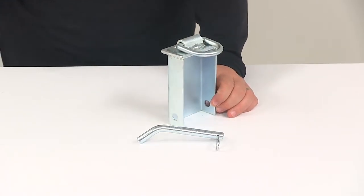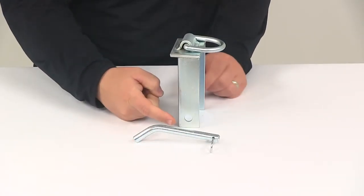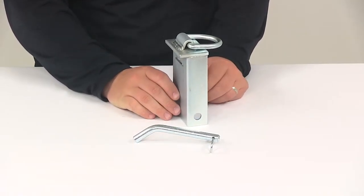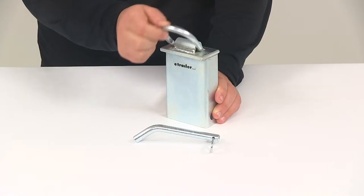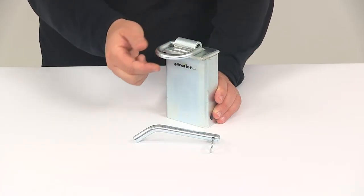The unit is going to secure in place with the included pin and clip. It's got the pin holes down here to run that through to get it fully secured. On top it's going to have the hinged D-ring. This allows your straps to be attached from different angles.